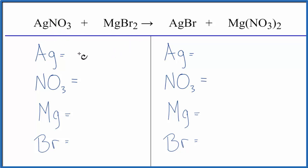Let's count the atoms. We have one silver, and then I have an NO3 here and here. This is a polyatomic ion, and it stays together in the chemical reaction. Since I have them on both sides, I'm just going to count this as one thing.